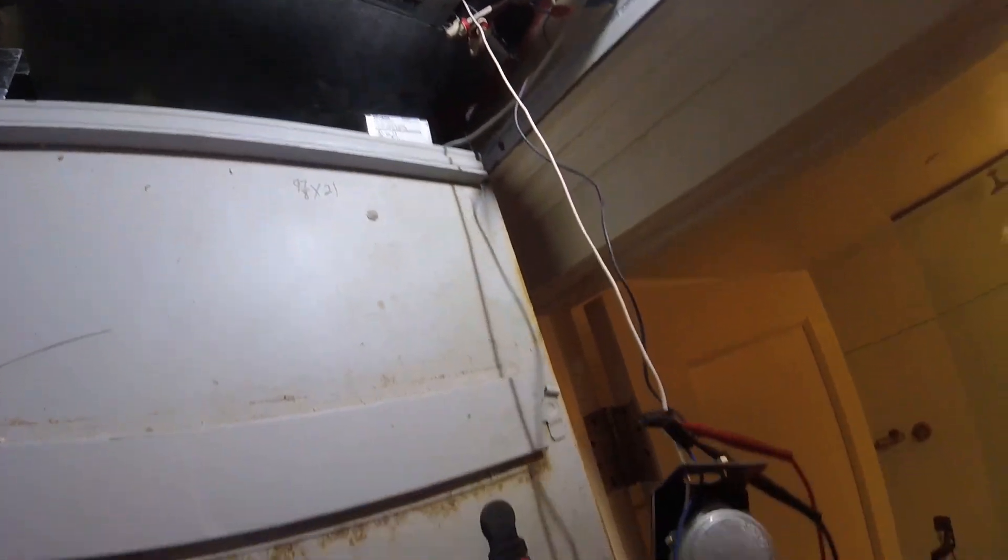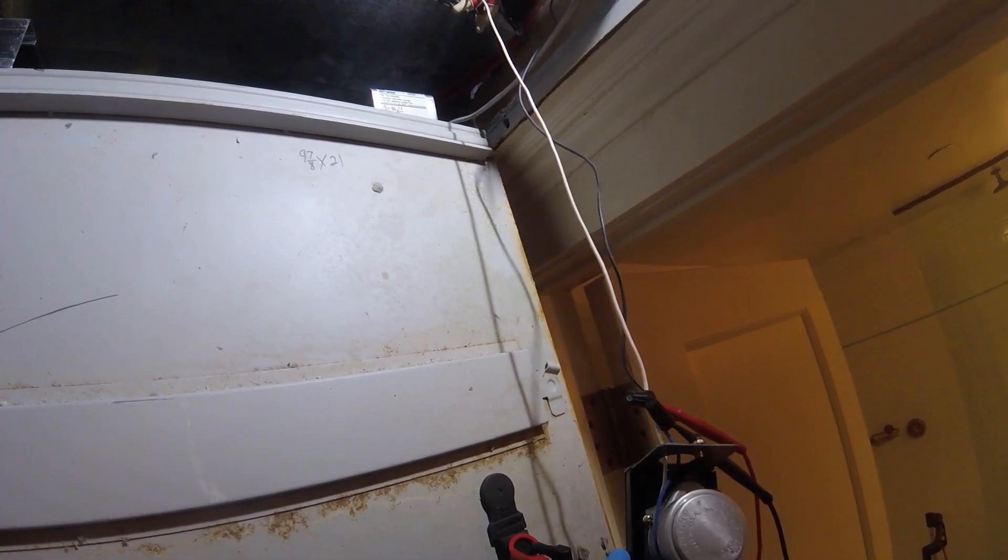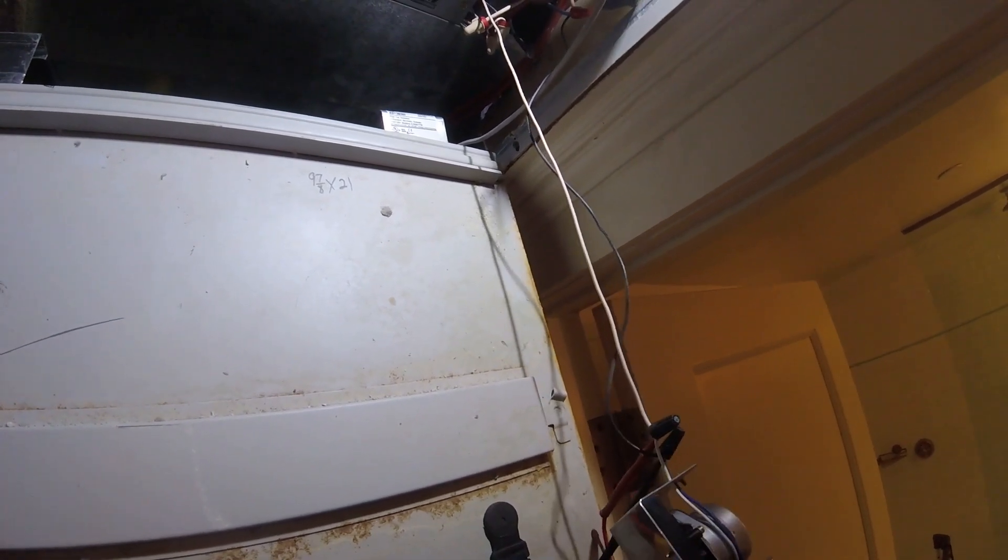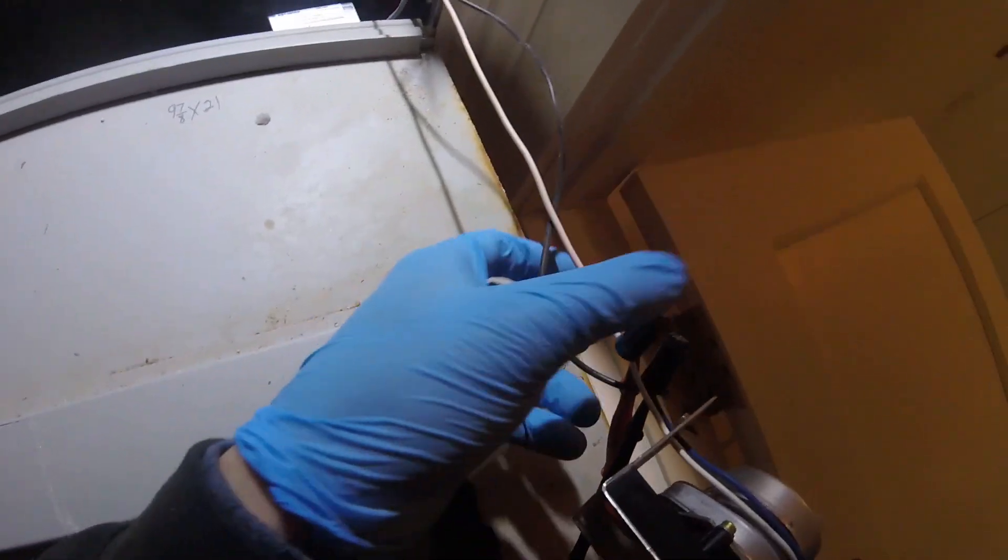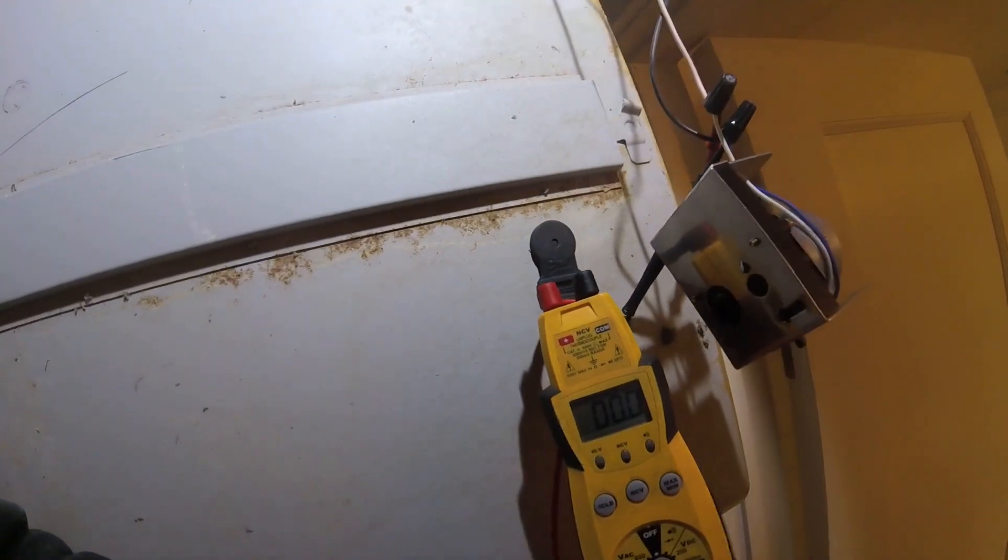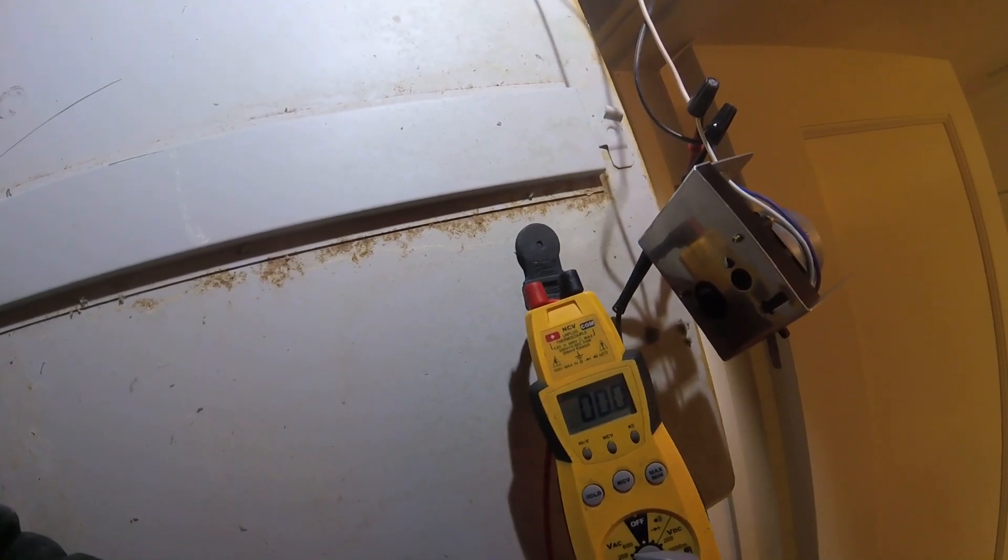When we open this cover I found the actuator just hanging there so they just had it bypassed. So the valve is, the water is always running. So I got my meter between the two terminals. We're in heat mode. I have it set to cooling and we have no voltage so that's good.